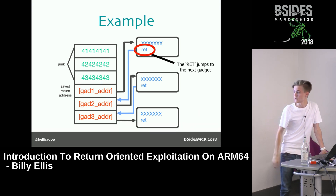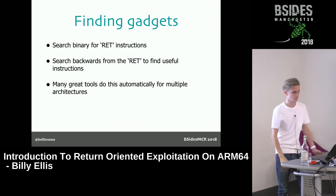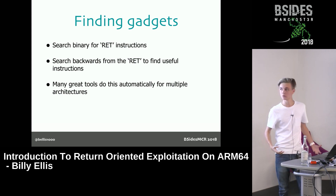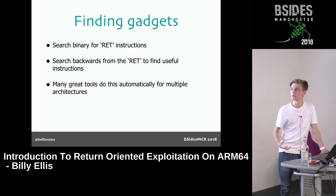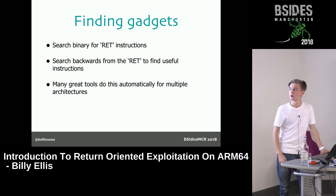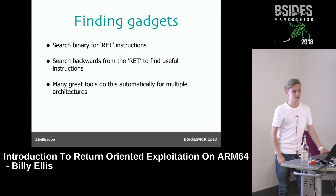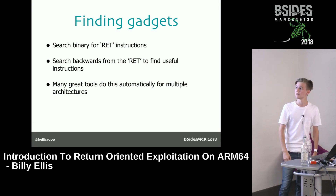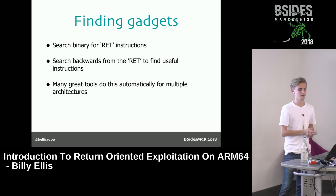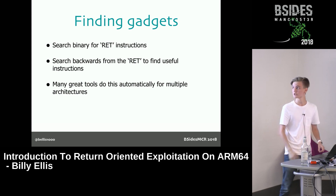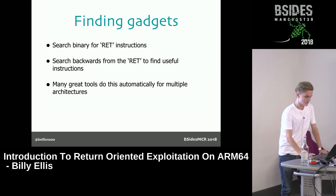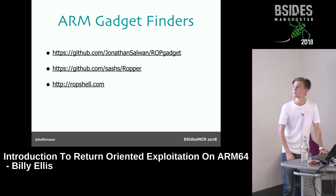To find gadgets, you need an efficient way to scan the binary. There are many tools available that will do this. Essentially it works by scanning the whole binary for return instructions first, then searching backwards in 4-byte chunks to look at the instructions that come before each one. If you find a useful instruction before a return, you note down the address of that gadget and use it in your payload. There are several tools available online to do this for you.